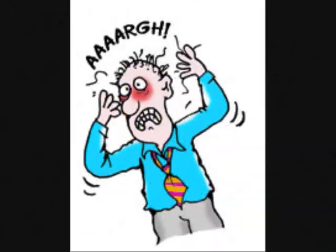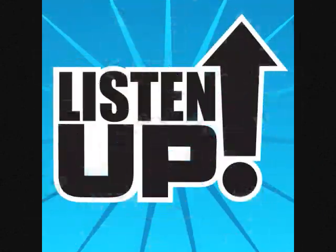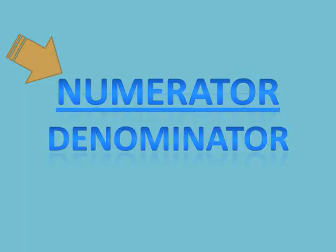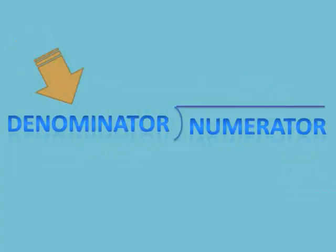Changing fractions to decimals, it's the action that I'm gonna profess to y'all. Now I'm not trying to cause any stress for y'all, so listen up if you know what's best for y'all. A fraction's got two parts, don't you know — the numerator on top, the denominator below. When you change to a decimal you gotta divide it: the denominator on the left and put the numerator inside.